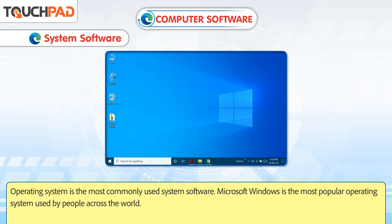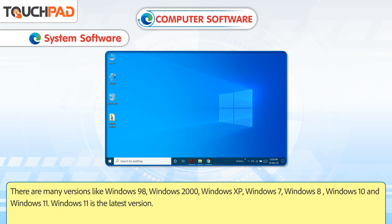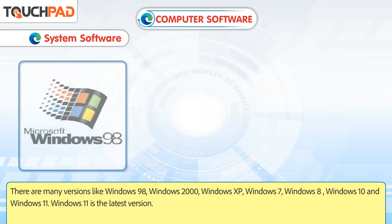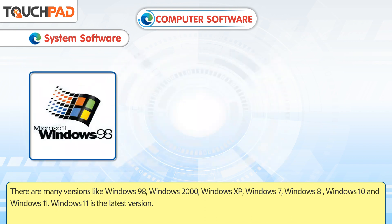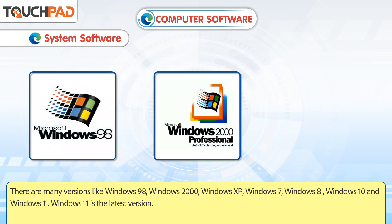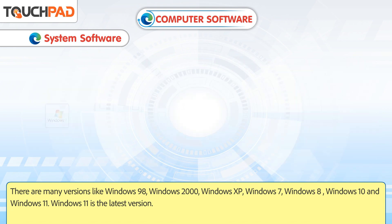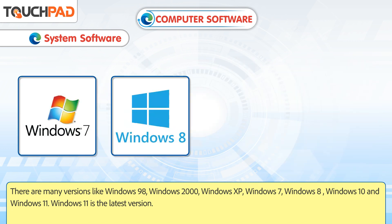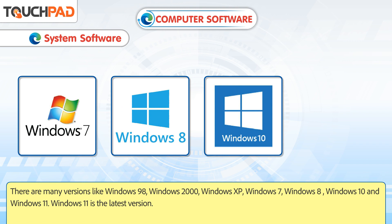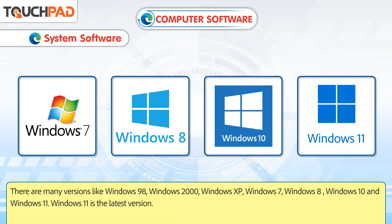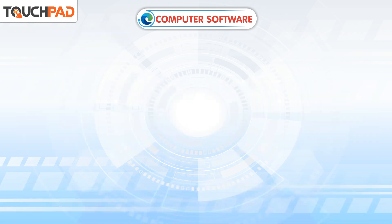Operating system is the most commonly used system software. Microsoft Windows is the most popular operating system used by people across the world. There are many versions like Windows 98, Windows 2000, Windows XP, Windows 7, Windows 8, Windows 10 and Windows 11. Windows 11 is the latest version.